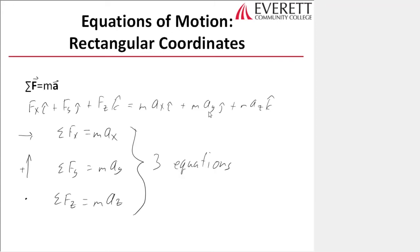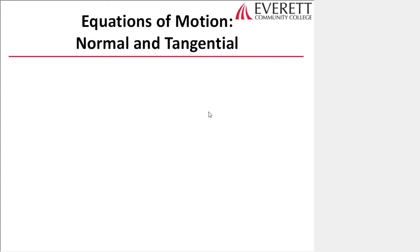Now we're going to redo this with normal-tangential coordinates. This is not a big jump—it's the same equation: sum of forces equals mass times acceleration. The forces can be in 3D and the acceleration is also in 3D, so we have a vector on both sides.